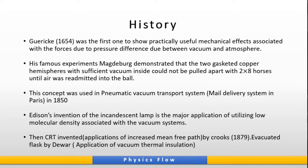This concept was used in a pneumatic vacuum transport system used in the mail delivery system in Paris. The incandescent lamp is a major application of utilizing low molecular density associated with vacuum systems. Eventually the CRT was invented by Crookes in 1879. The evacuated flask by Dewar applied vacuum thermal insulation and was used for many scientific experiments.